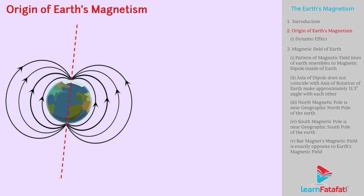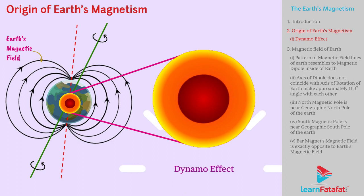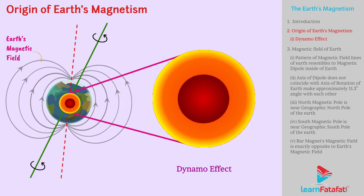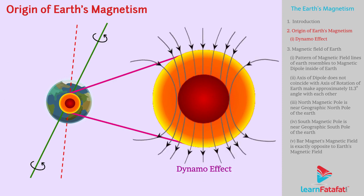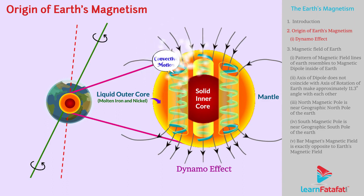Origin of Earth's Magnetism. Earlier, it was thought that the magnetic field of Earth arises due to a giant bar magnet placed approximately along the axis of rotation of the Earth and deep in the interior. However, now we think the reason for Earth's magnetic field is the dynamo effect. According to this theory, the magnetic field is generated due to the convective motion of hot fluids containing mainly molten iron and nickel in the outer core of Earth. Convective motion suggests hot fluid is lifted up and cold fluid settles down.